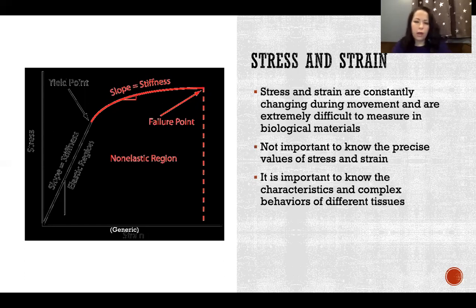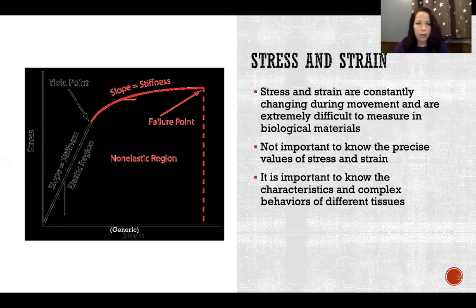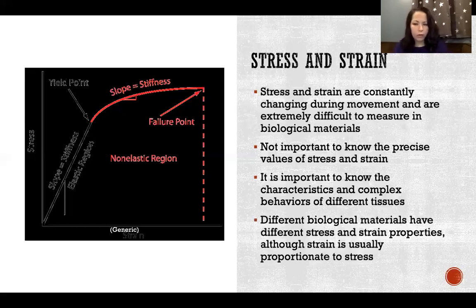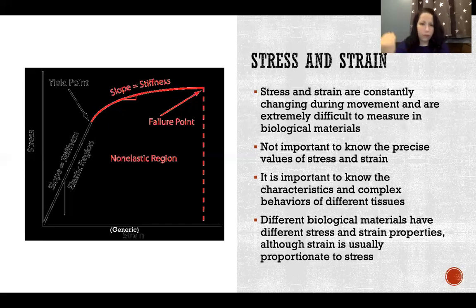It's important to know the characteristics and complex behaviors of different tissues because it will help us prevent injuries with athletes, improve performance, and especially in injury rehabilitation. If you're working with people who have torn ligaments or that sort of thing, it's very helpful to understand the properties of the tissues that you're trying to help the person heal. Different biological materials have different stress and strain properties, although strain is usually proportionate to stress — more stress generally equals more strain. There are exceptions, like concrete, where stress can increase and increase until all of a sudden the material fails without proportionate strain.